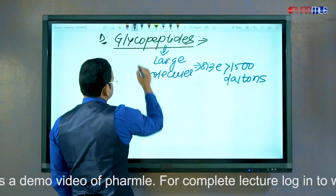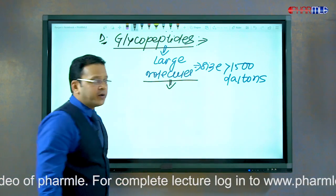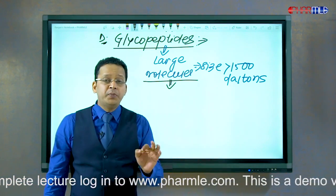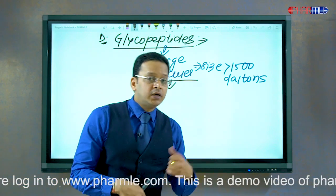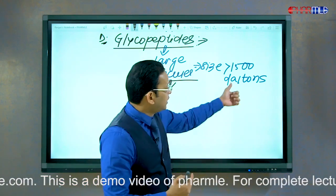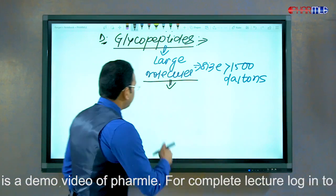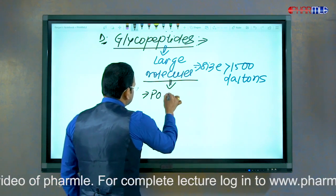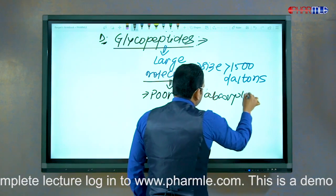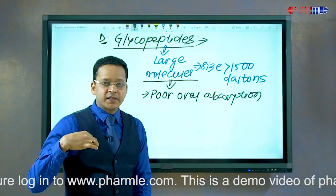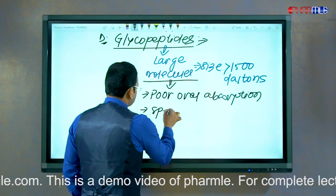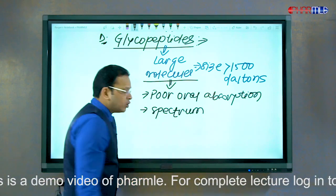From the fact that these are large molecules, we can find out two things. Number one: route of administration. For a drug to be absorbed by oral route, the drug must have a size less than 200 daltons. Since glycopeptides have a size more than 1500 daltons, they have poor oral absorption, and for systemic uses we cannot use them by oral route.